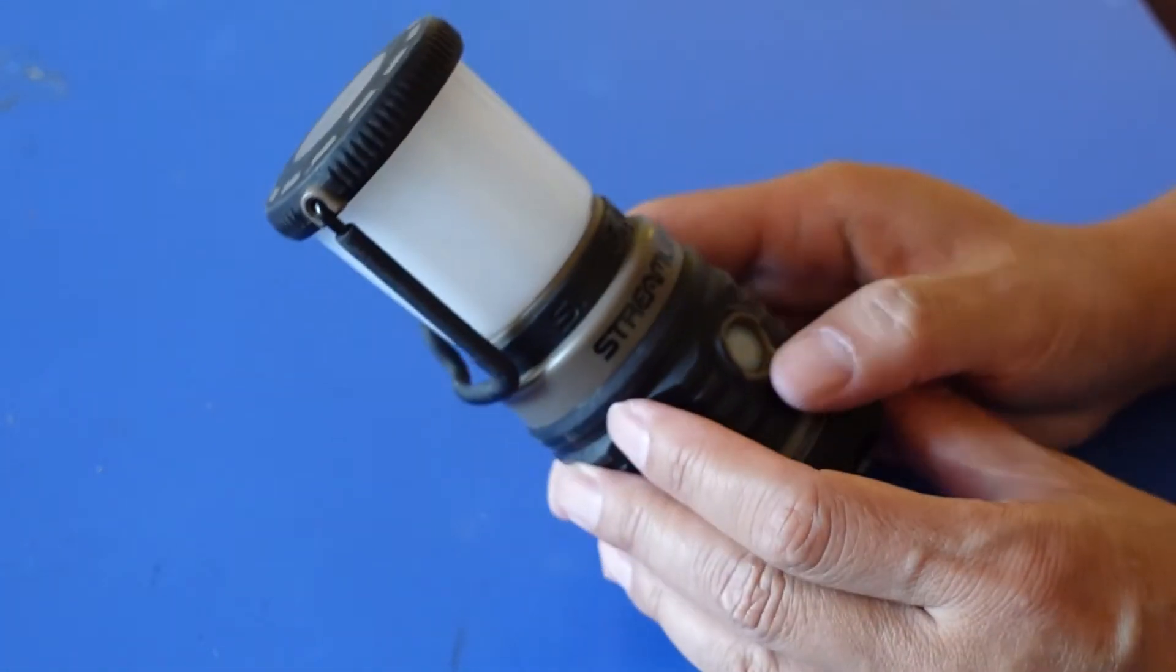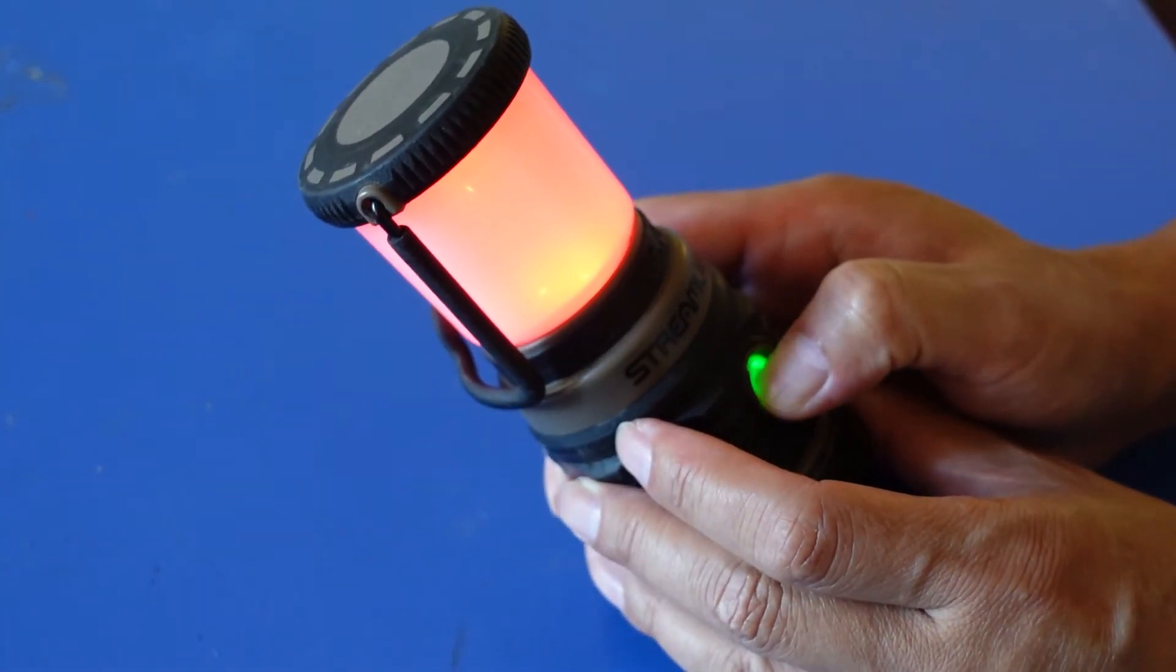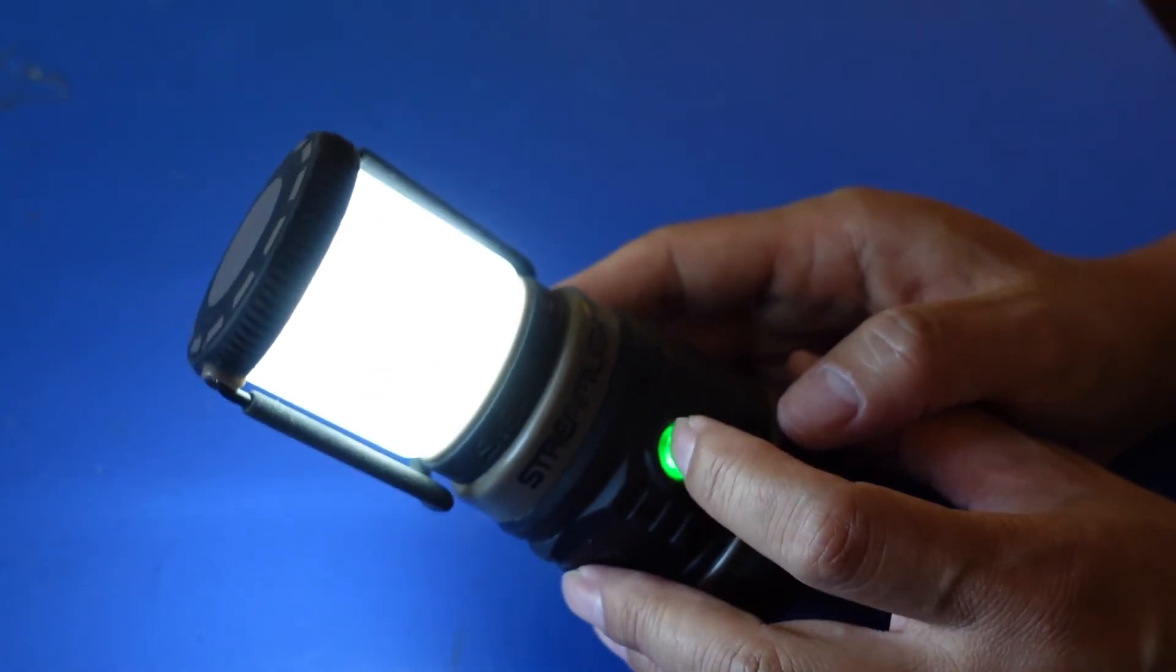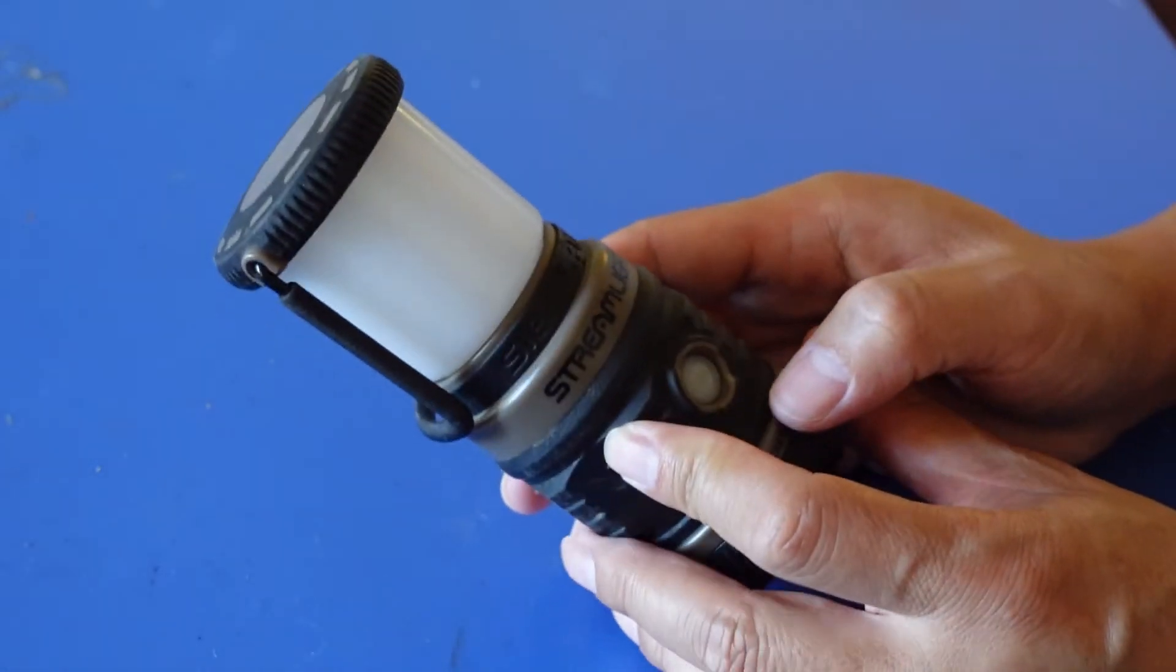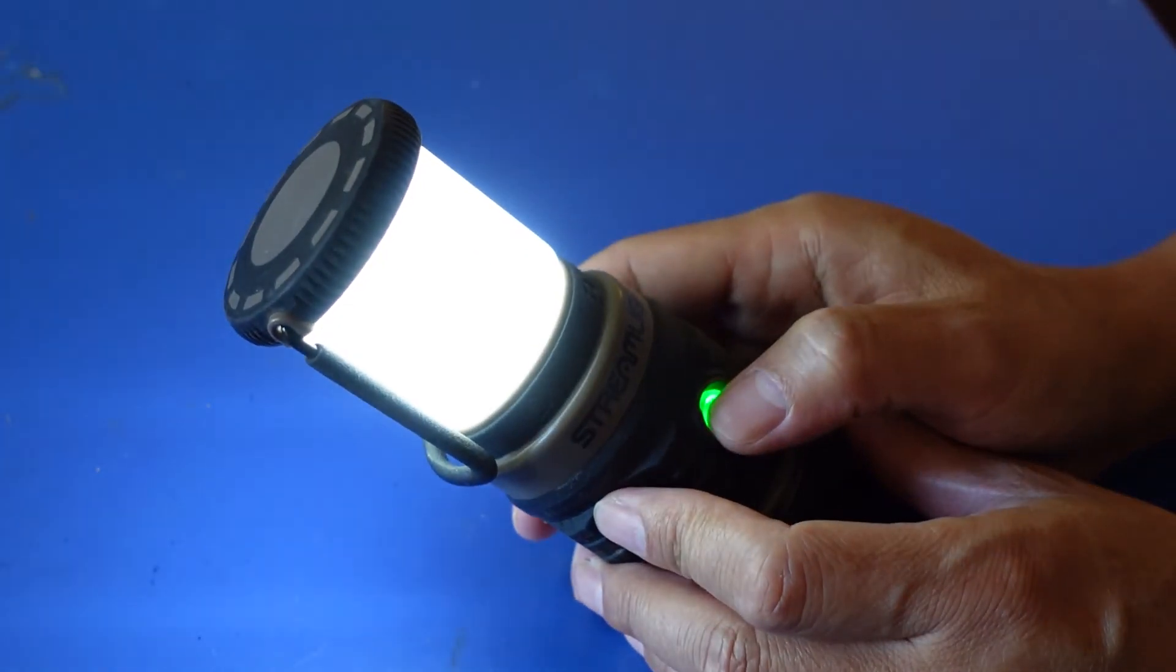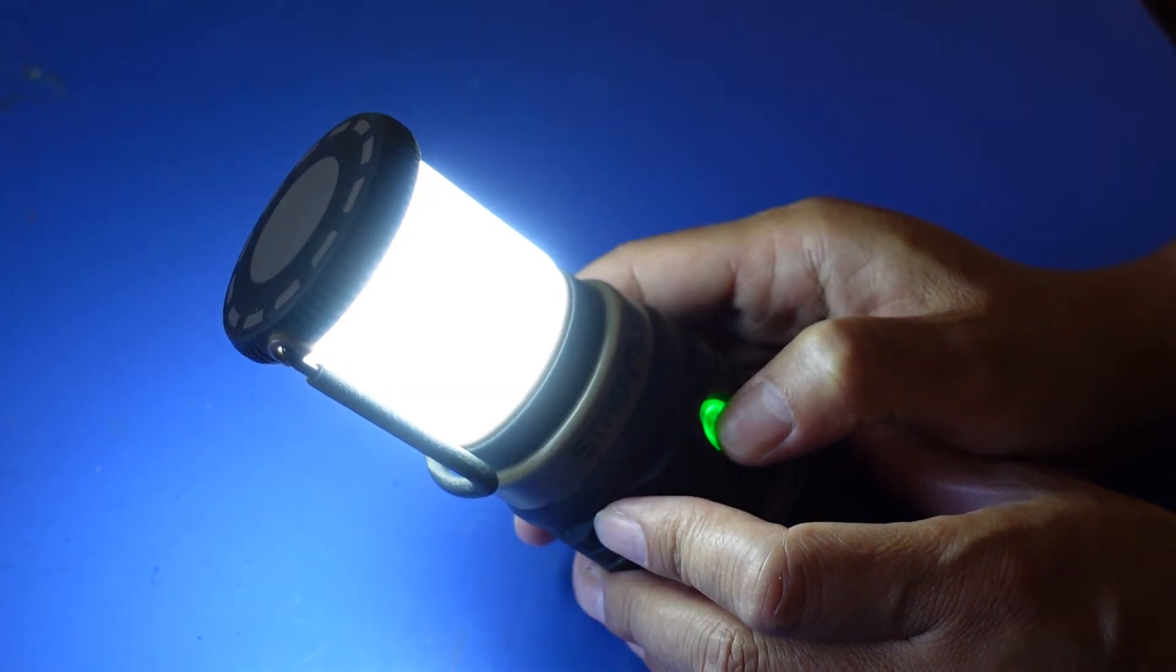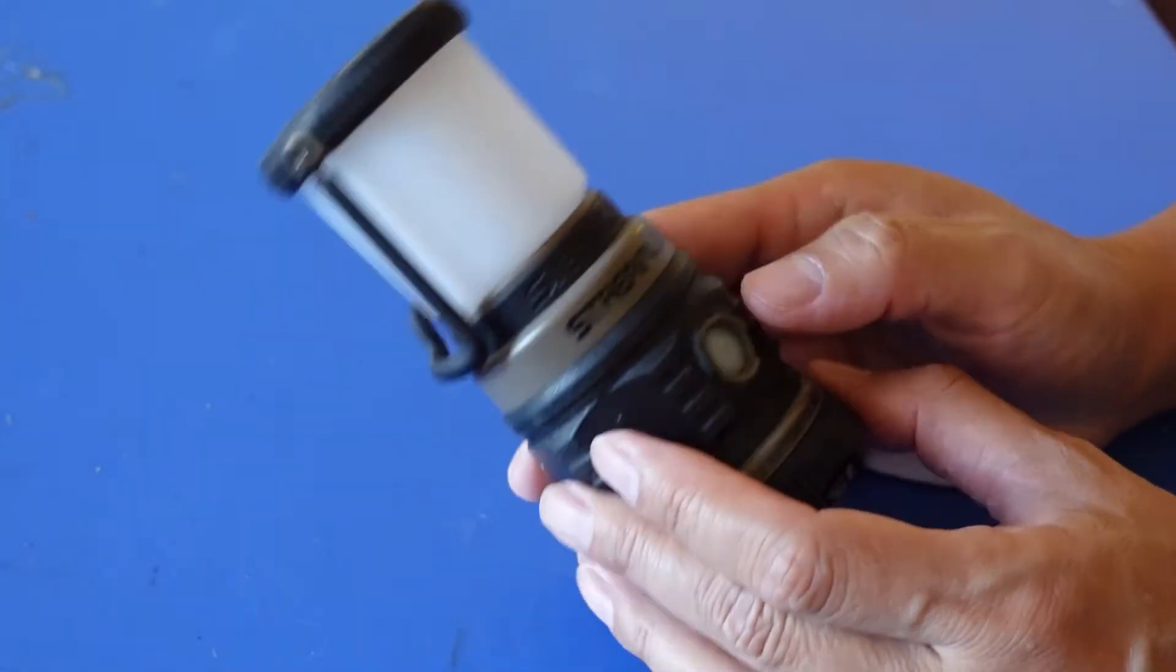To disable the SOS lighting, you just press and hold it. Press once - that's low setting. Medium setting. High setting. Press again, turn it off.